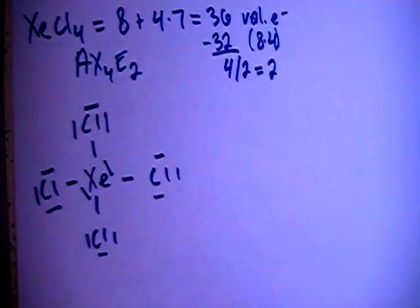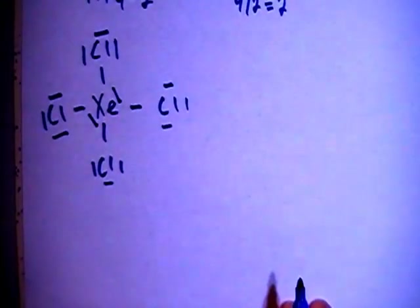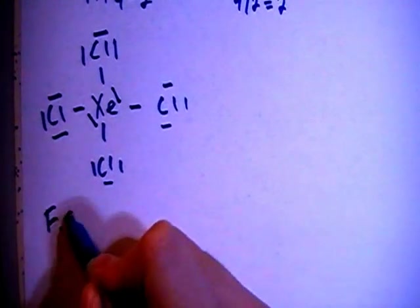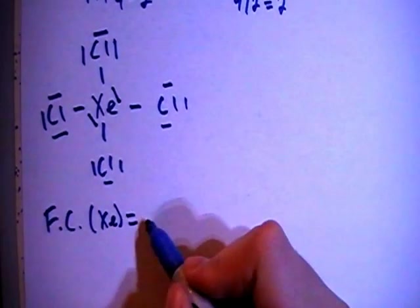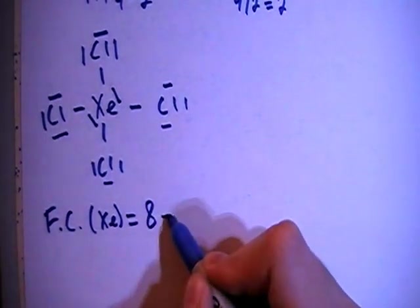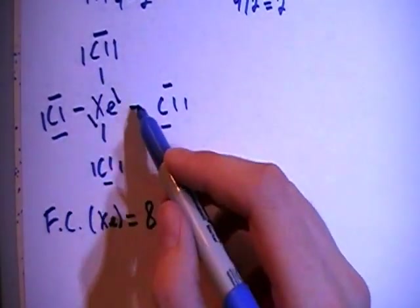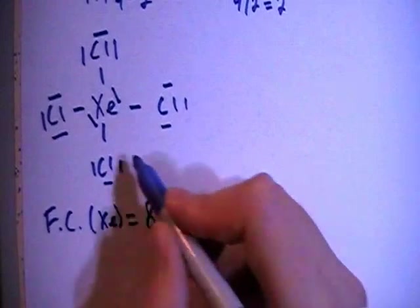Let's check the formal charges to make sure that this is the correct structure. The formal charge on xenon is going to be the 8 valence brought in, minus 1, 2, 3, 4 bonds, minus 1, 2, 3, 4 non-bonding electrons for a formal charge of 0.